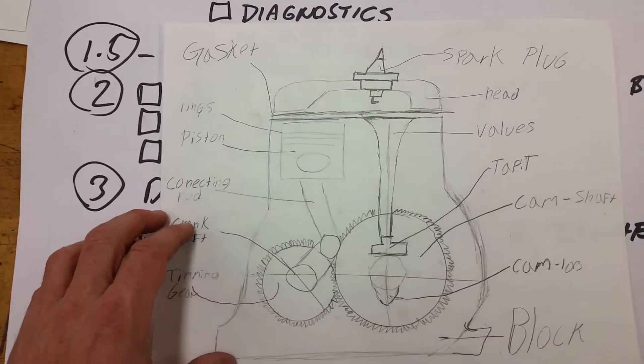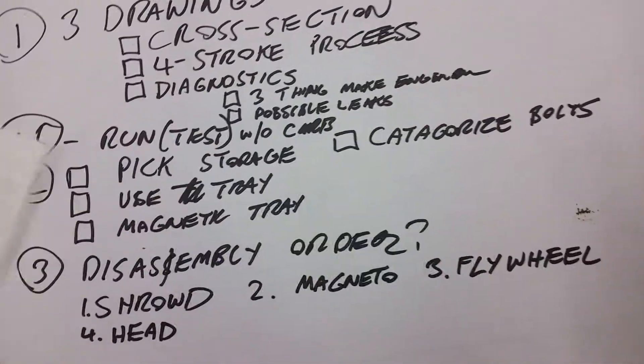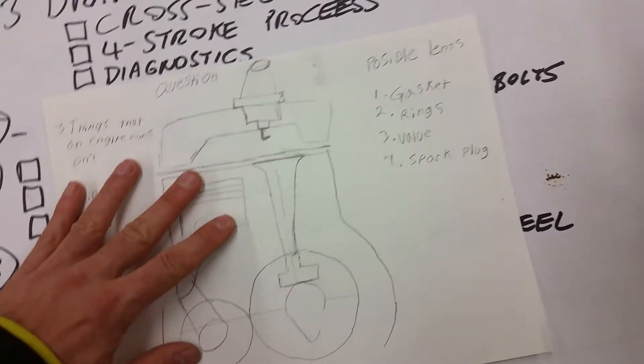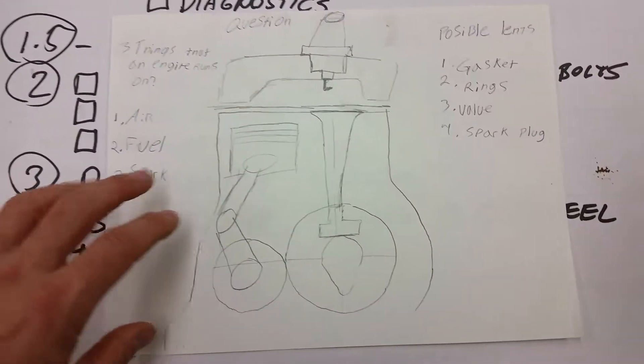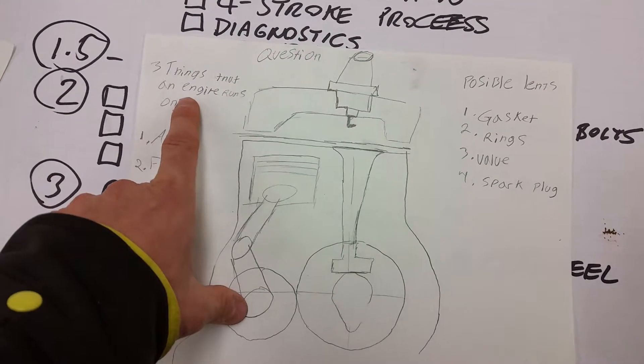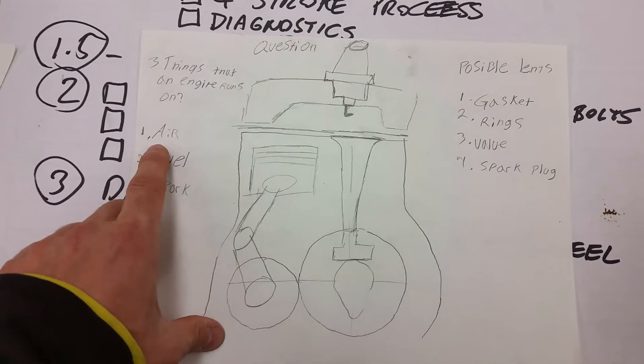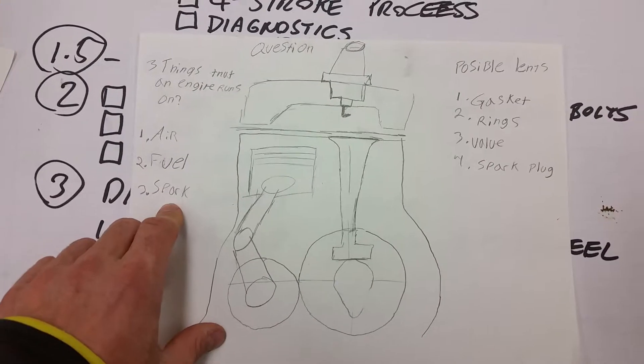Okay, and then the last drawing is the diagnostics, which is over here. So once again, there's one of my students' example of a student drawing. And what we have here is three things that make an engine run: you have air, fuel, and spark.